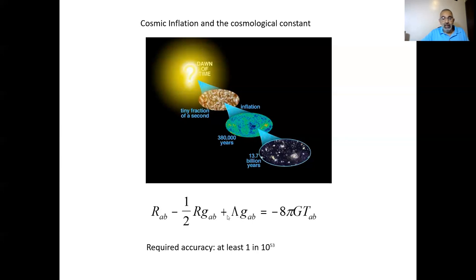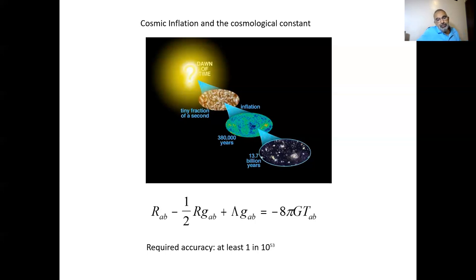Ten years later, when Edwin Hubble discovered that the universe was indeed expanding, Einstein said that introducing the cosmological constant was his greatest blunder. If he had just trusted his equations, he could have predicted the expansion of the universe on purely theoretical grounds. So the cosmological constant sort of went away and died for a few decades.